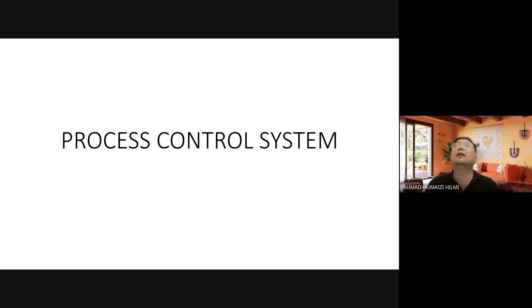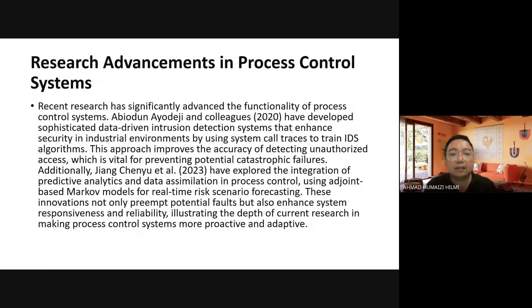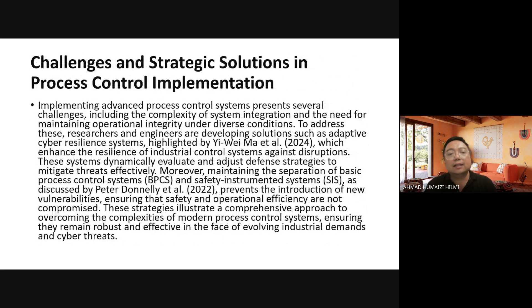The Process Control System is essential in modern manufacturing operations. This system leverages real-time data to manage and optimize dynamic operations. Research from Abioden, Iojd, and colleagues in 2020 developed sophisticated data-driven intrusion detection systems that enhance security in industrial environments, improving accuracy in detecting unauthorized access vital for preventing potential process failures. Additionally, Yang Chenyu in 2023 explored the integration of predictive analytics and data assimilation in process control using a joint-based Markov model for real-time scenario forecasting to pre-empt potential faults.